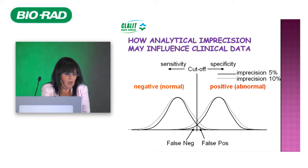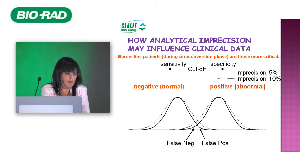In serology and immunology, changing imprecision from 5% to 10% is very influential — at least for borderline patients, particularly those in the seroconversion phase, where this becomes much more critical.